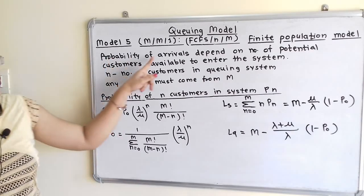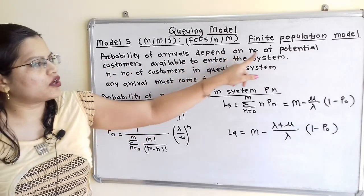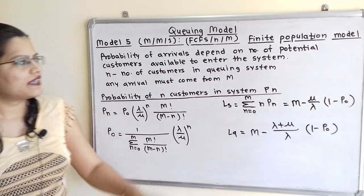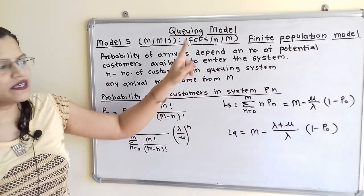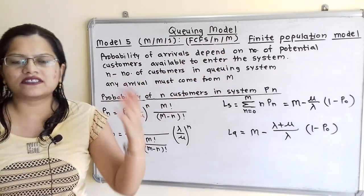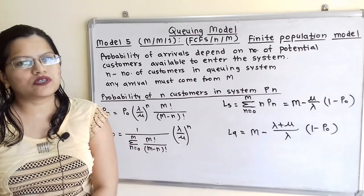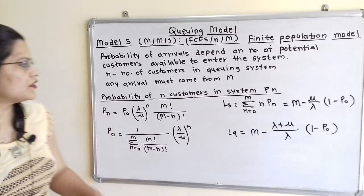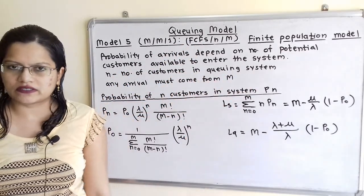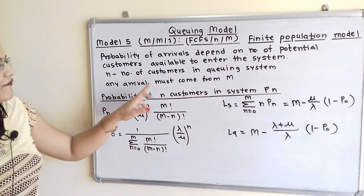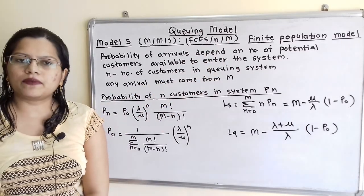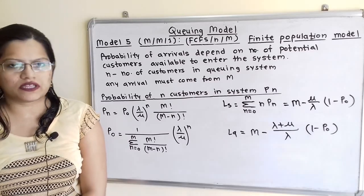The probability of arrival depends on the number of potential customers available to enter the system — that means new arrivals depend on the value of capital M. Capital M is known as the population or calling source. We define small n as the number of customers in the queuing system, and any arrival must come from capital M. Now let us understand some important formulas to solve the questions.